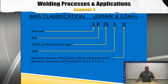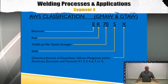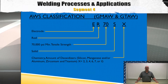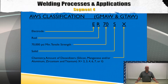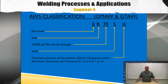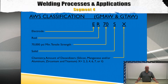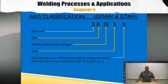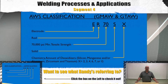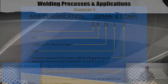For the AWS filler metal classification of the GTAW process, the classification mimics the GMAW filler metal classification exactly. Briefly take a look at this slide for reference, but for a deeper explanation, head over to our GMAW segment located at the bottom of your screen.